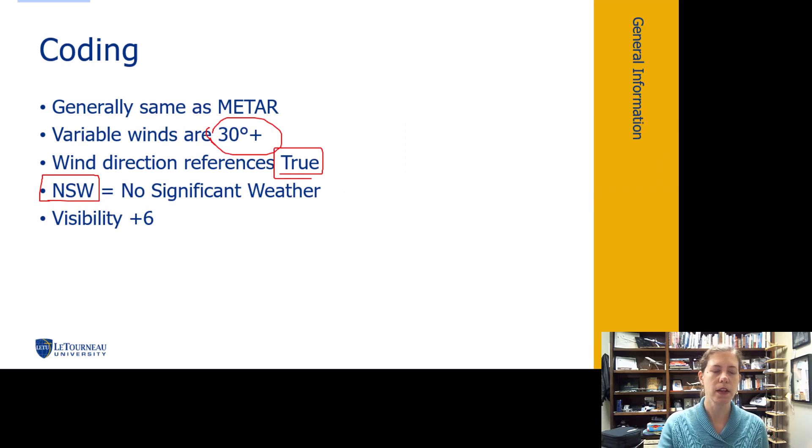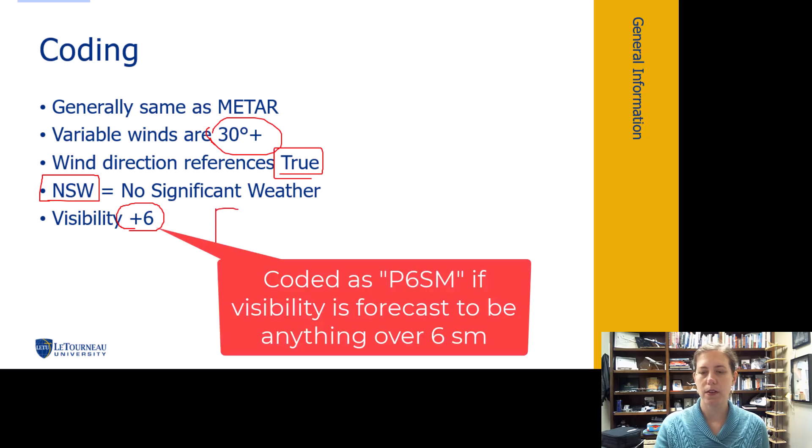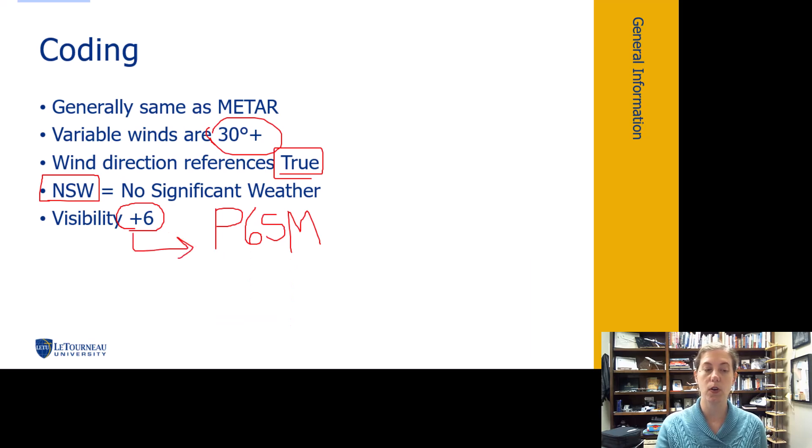And finally, the visibility. So it's not coded in the United States if the visibility is forecast to be greater than six statute miles. But how they do it, like so many other things that we've been looking at, is we put a big old P in front of it and we say it's plus or P six statute miles. So visibility of greater than six will be coded as P6SM. That just means it's going to be something greater than six. Doesn't mean it's going to be 10, eight, whatever. It's just something greater than six.